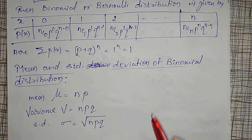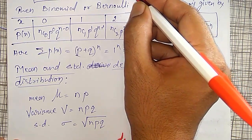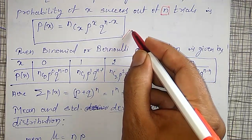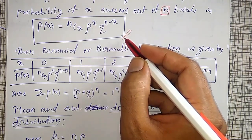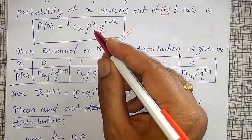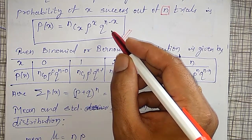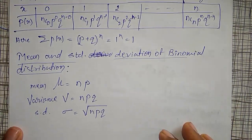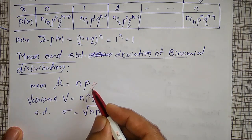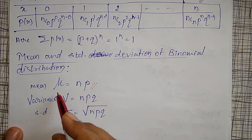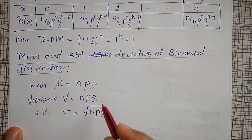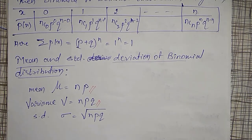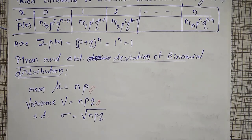You must remember the probability function P(x) = nCx · p^x · q^(n−x) for n trials, and also that mean = np and variance = npq are very important formulas for the binomial distribution.